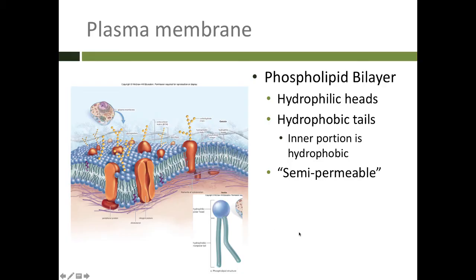Inside the body we have lots and lots of water — outside the cell there's water, inside the cell there's water. So this phospholipid bilayer will arrange itself in two layers so that the hydrophobic tails are hiding away from all that water inside, and the hydrophilic heads are facing either outside the cell or inside the cell. Because we have this hydrophobic core, it allows the plasma membrane to be what we call semi-permeable, which means some things can come through and some things can't.